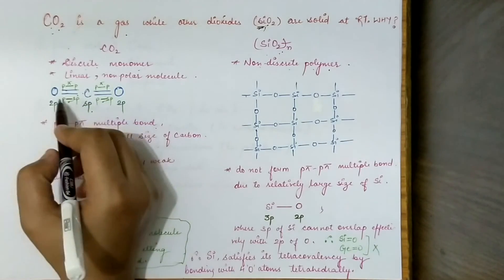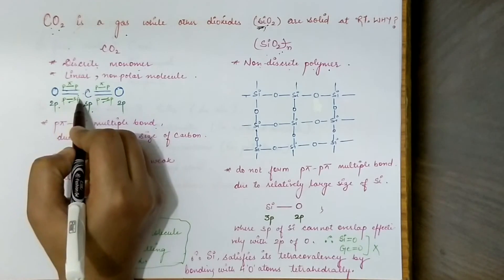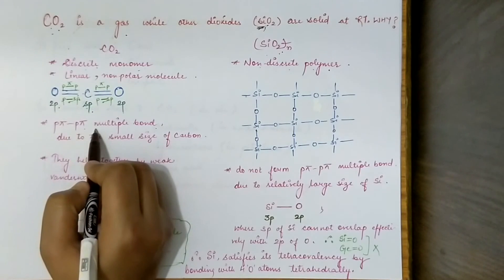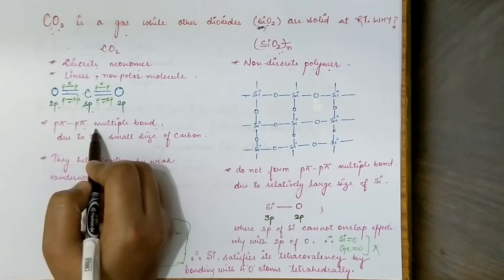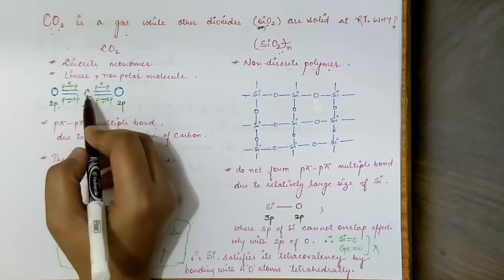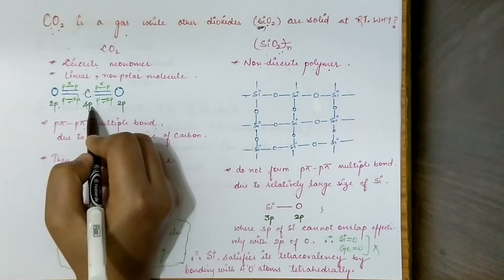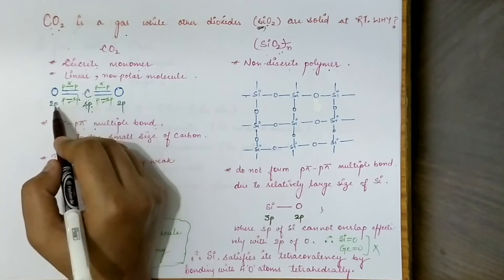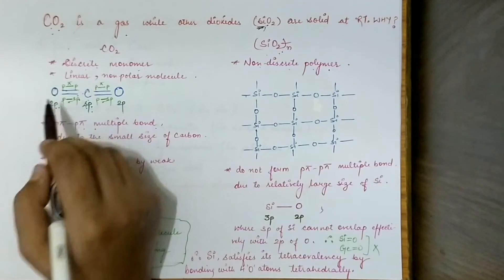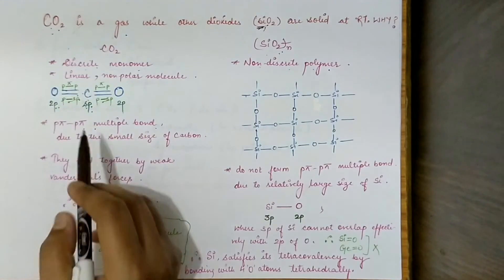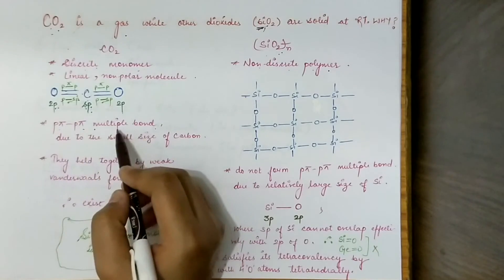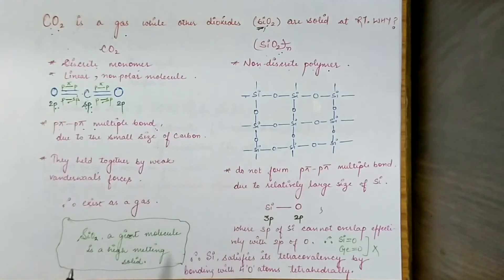So this bond is very strong, and the bonding in CO₂ is basically a p-pi p-pi multiple bond, because the orbital participating is the sp orbital of carbon and the 2p orbital of oxygen. Therefore this is known as the p-pi p-pi multiple bond, due to the small size of the carbon atom.